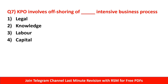Question number 7 is about Knowledge Process Outsourcing. KPO involves offshoring of 'dash' intensive business processes. If you know the full form of KPO — Knowledge Process Outsourcing — you can answer this directly. KPO relates to knowledge, so the right answer is option number 2: knowledge.